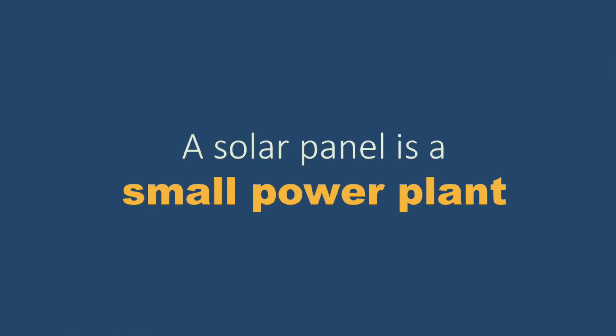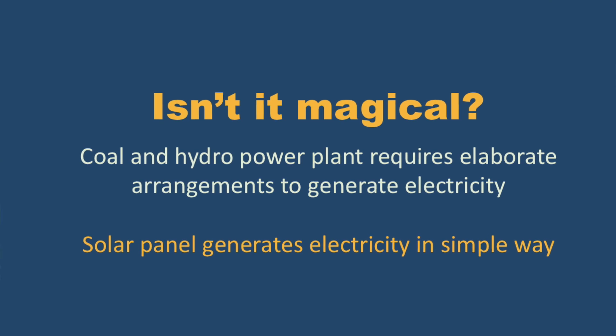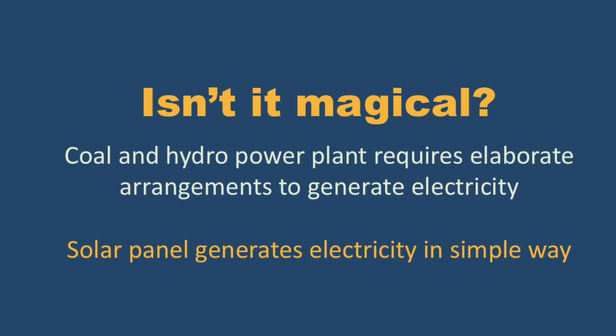What is a solar panel? In my view, a solar panel is nothing but a small power plant. The job of a power plant is to generate power — like a coal power plant, hydro power plant, or nuclear power plant — all of these generate electricity. A solar panel does the same thing, but in a very simple way. The generation of power using a coal power plant is very complicated — you need to mine the coal, bring it to the power plant, and then generate electricity.